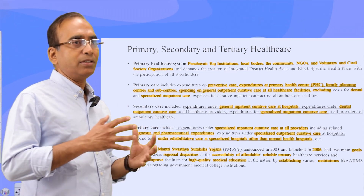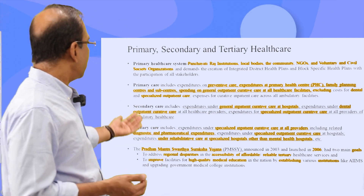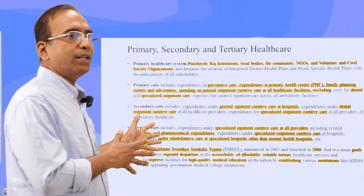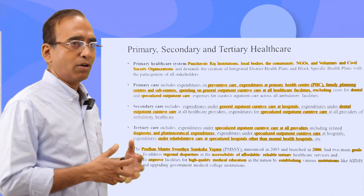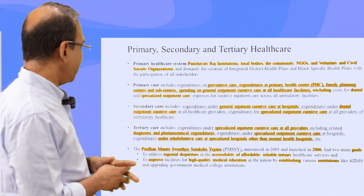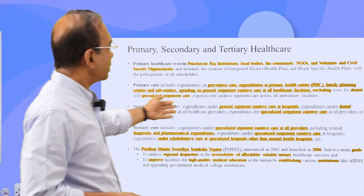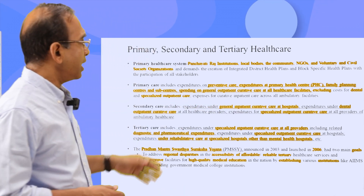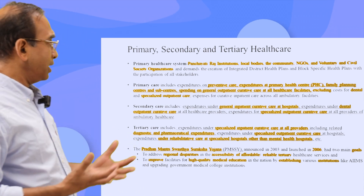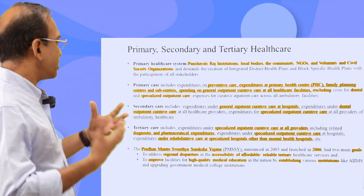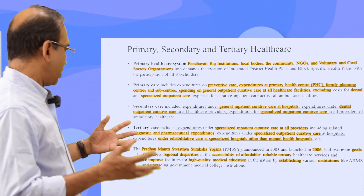Once the patient is not recovering or seems to be critical, patients are sent from the primary care center to a secondary care facility, which could be a district hospital or a bigger hospital in subdivisions. Secondary care includes general inpatient curative care at hospitals, and tertiary care is more critical where major surgery is required, generally at state capitals or bigger cities.